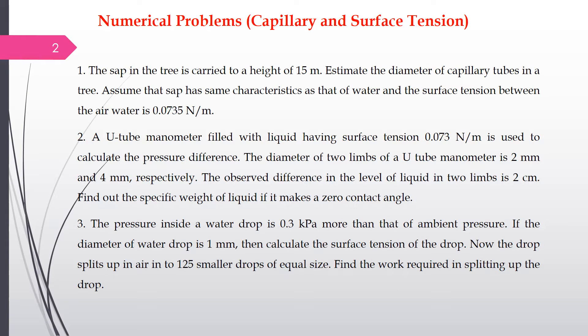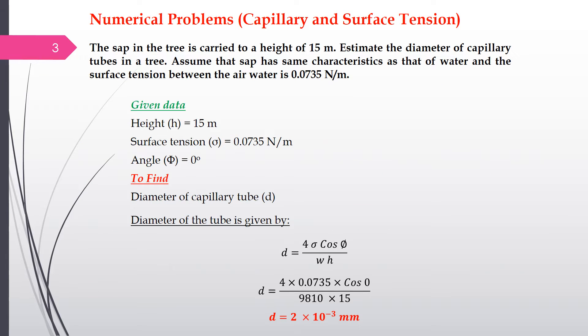These are the three numerical problems that we will discuss one by one. The first numerical problem is: the sap in a tree is carried to a height of 15 meters. We have to estimate the diameter of the capillary tube in the tree, and we will assume that the sap has the same characteristics as water. The surface tension between air and water is 0.0735 Newton per meter.